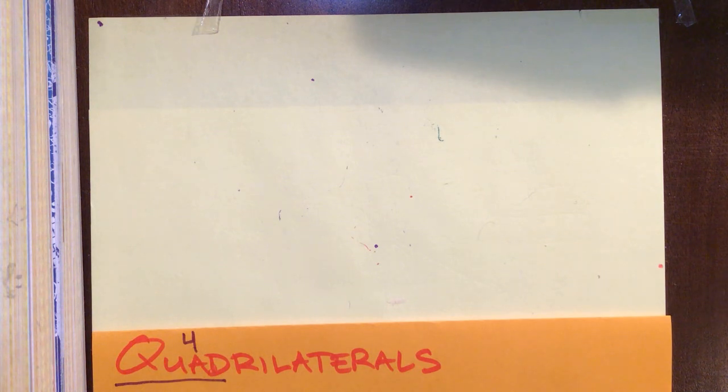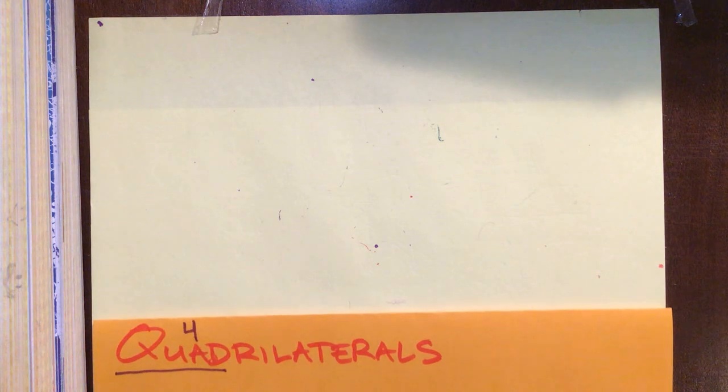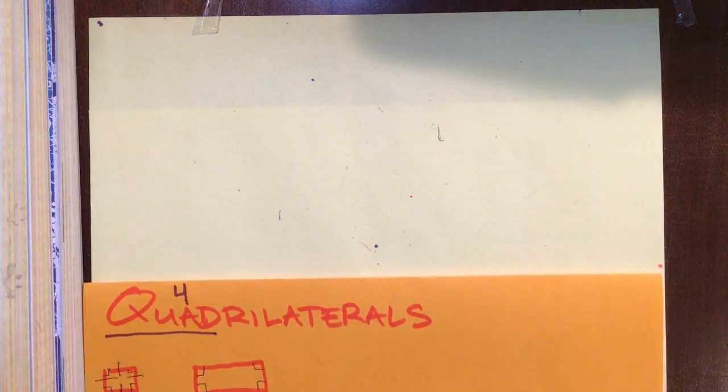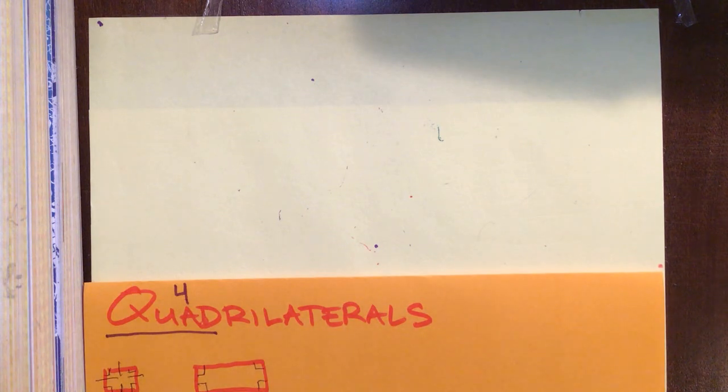We're going to be talking about four-sided objects. The first ones that come to mind are squares and rectangles. They both have 90 degree angles on all their corners. Squares have congruent sides, exact same sides all the way around.